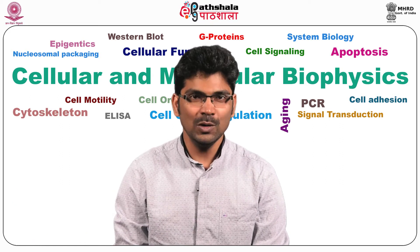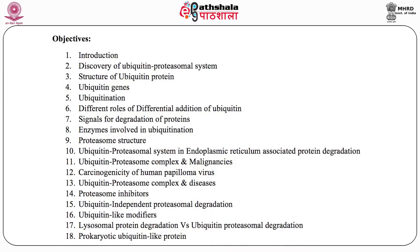After completing this module, you should be able to understand the following: discovery of Ubiquitin Proteasomal System, structure of Ubiquitin protein and Ubiquitin genes, different roles of differential addition of Ubiquitin signals for degradation of proteins, enzymes involved in Ubiquitination, structure of Proteasome, role of Ubiquitin Proteasomal System in Endoplasmic Reticulum Associated Protein Degradation, Ubiquitin Proteasome Complex in Various Diseases, Proteasome Inhibitors, Ubiquitin Independent Proteasomal Degradation, Ubiquitin-like Modifiers, the difference between Lysosomal Protein Degradation and Ubiquitin Proteasomal Degradation, and finally, Prokaryotic Ubiquitin-like Protein.